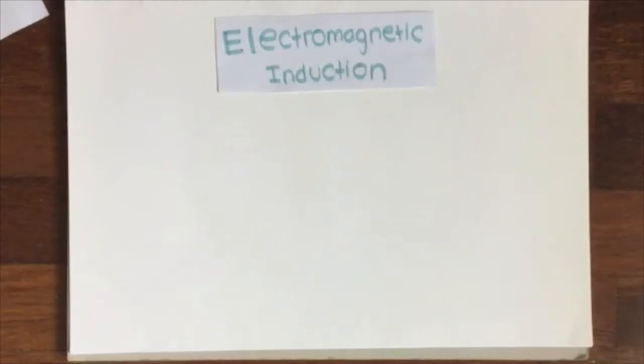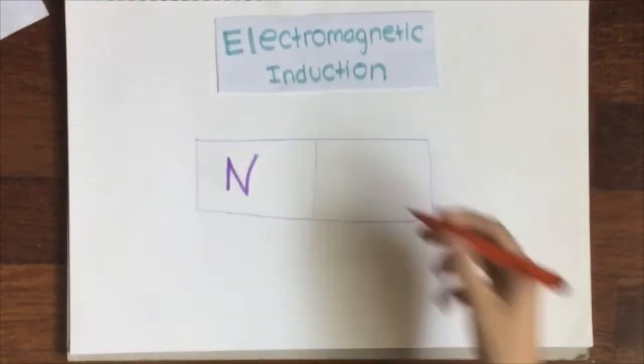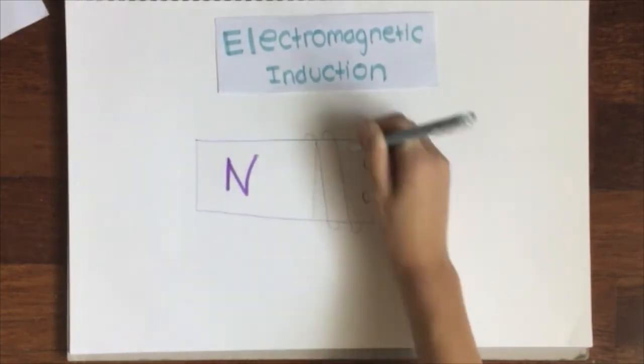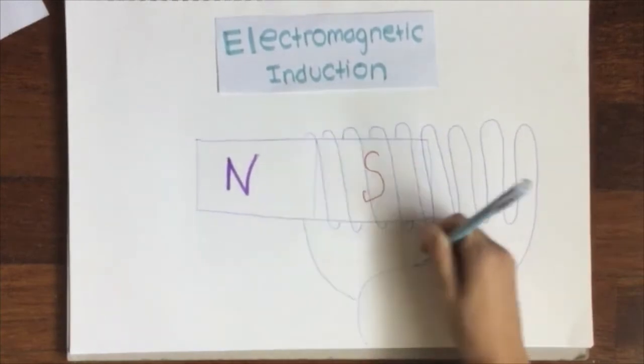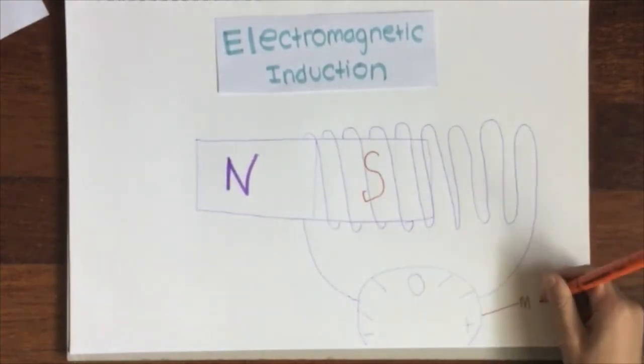The definition of induction is when a voltage is produced in a coil of wire when a magnet is moved into it. This means when a magnet moves towards the coil, the needle of the galvanometer will deflect away from its center position in one direction only.